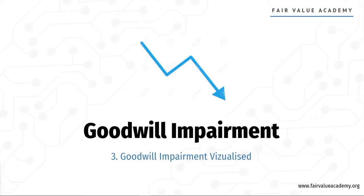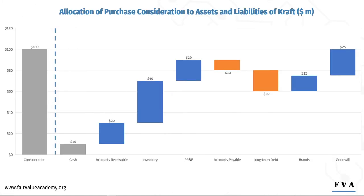In this module, I will explain what is Goodwill Impairment. Back to our example: the Heinz acquisition of Kraft.